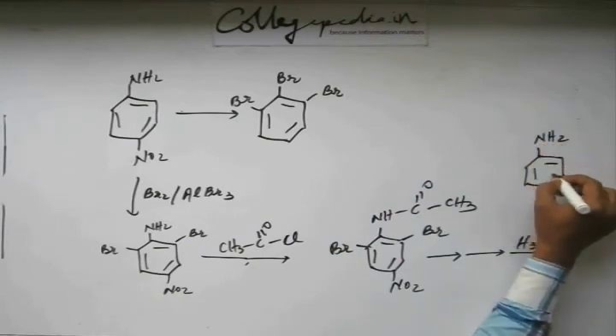Now you have this, and from here again if you prepare diazonium salt of it, once you prepare diazonium salt and then make it react with CuBr, then you will get the desired product.